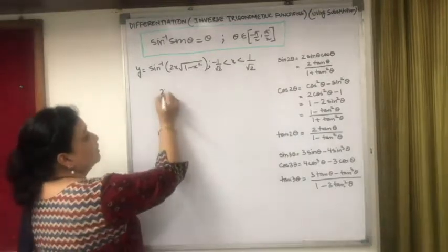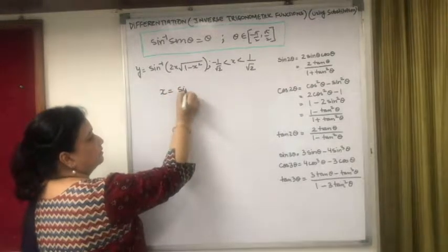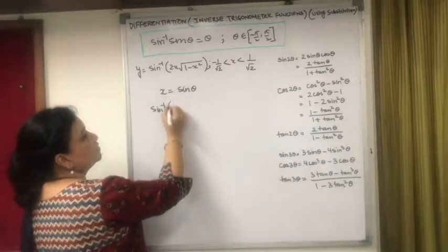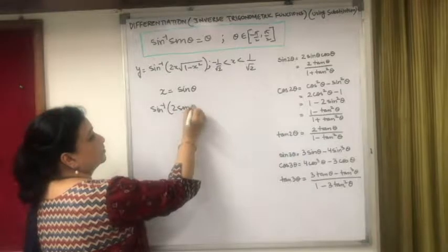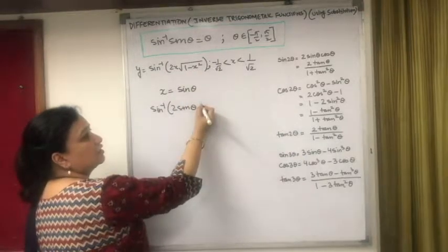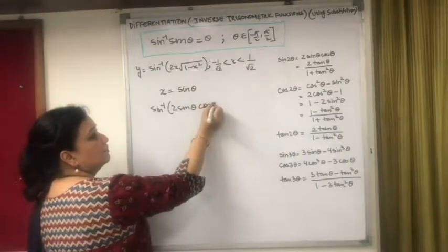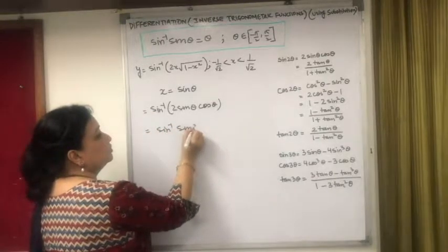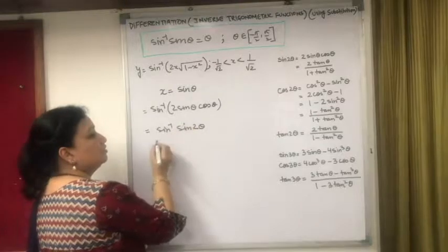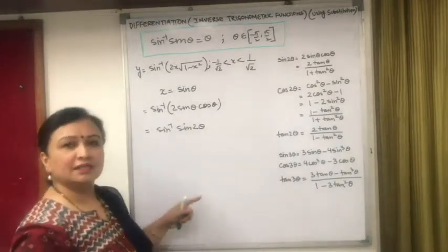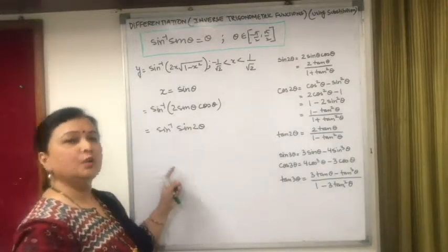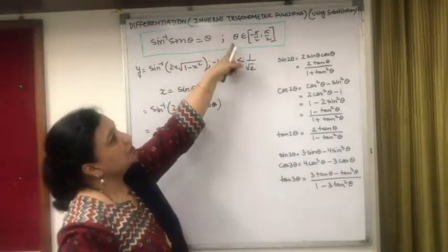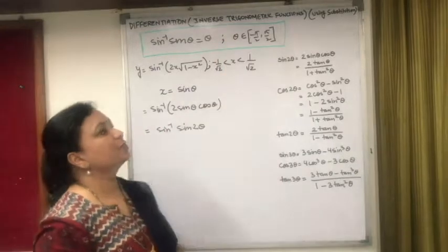First, if I start with x = sin θ, the expression becomes sin⁻¹(2 sin θ · √(1 - sin²θ)), where √(1 - sin²θ) = cos θ. So this equals sin⁻¹(sin 2θ). Now, this expression can be written as 2θ only when sin⁻¹(sin θ) = θ, which requires θ ∈ [-π/2, π/2].